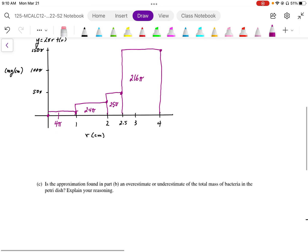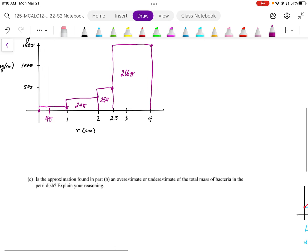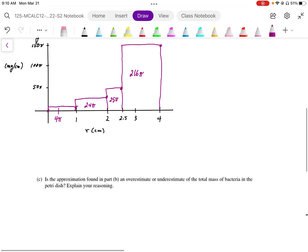The next part of this asks, is the approximation found in part B an overestimate or an underestimate of the total mass of the bacteria in the Petri dish?